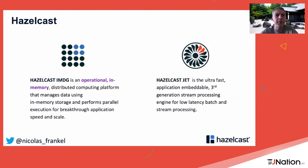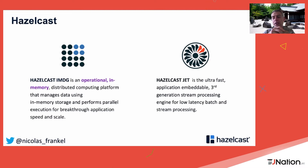I work for a company called Hazelcast. We have two products. One is an in-memory data grid — basically distributed data structures over the network. For example, it looks like a map but the data is spread across every node. The second product is called Hazelcast Jet, which I will use later in the talk.